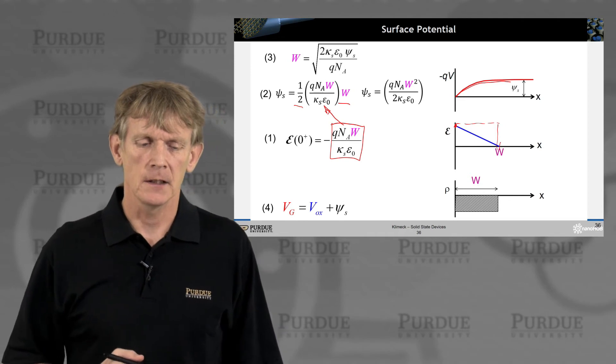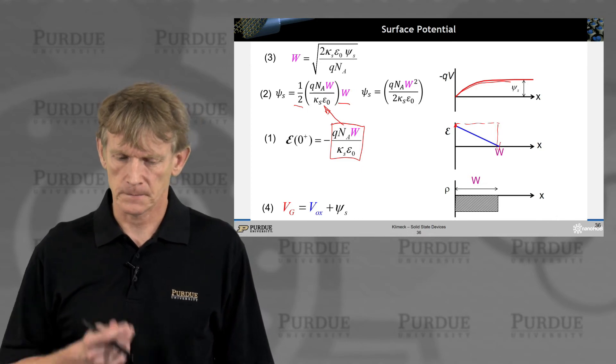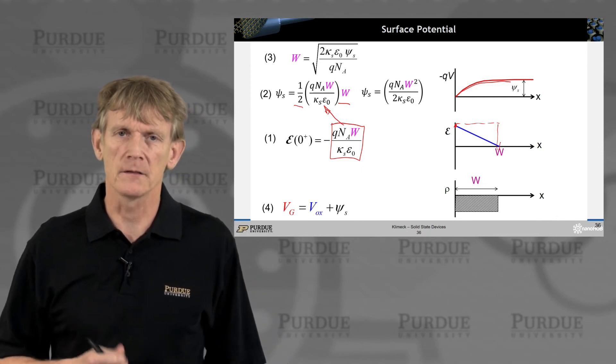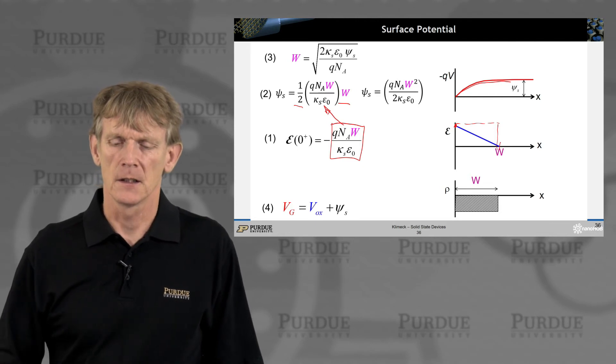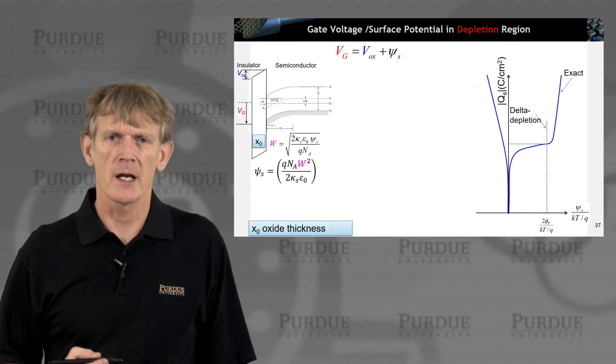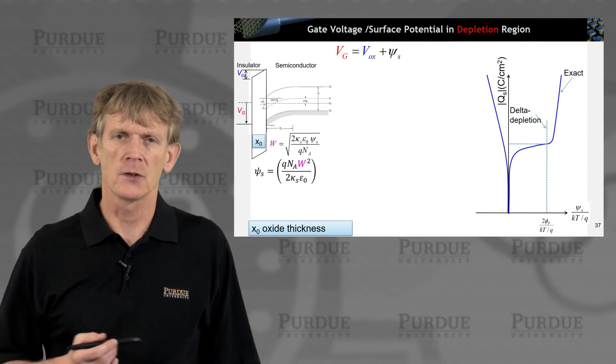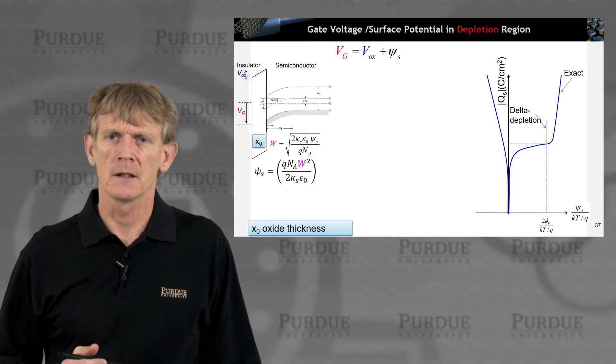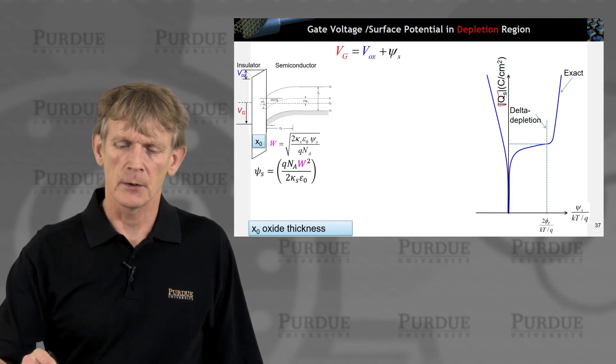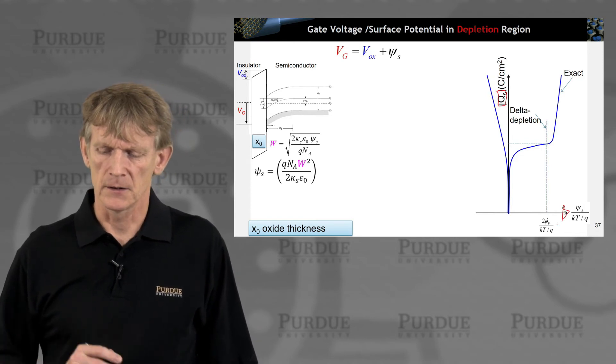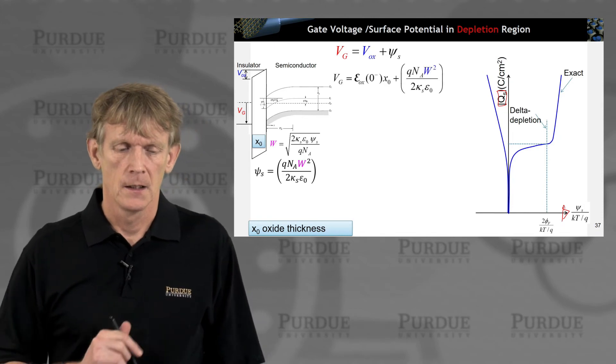From that, we can now get the width of this depletion region. Relate the width of the depletion region to the surface potential and the acceptor doping. So, we have these two expressions for the width and the surface potential, and we're interested in obtaining or relating the semiconductor charge as a function of this surface potential.